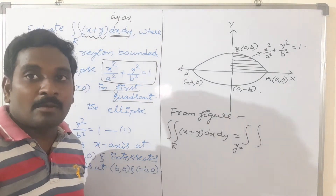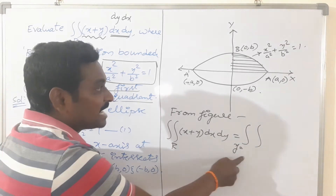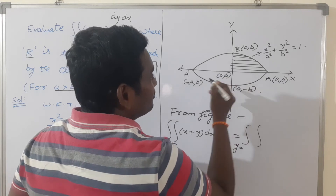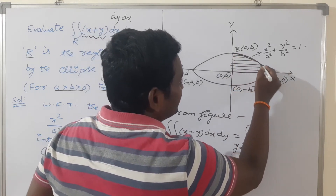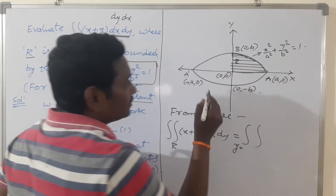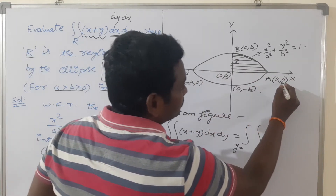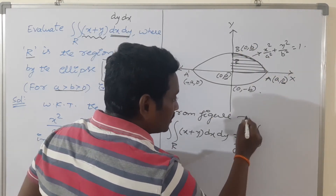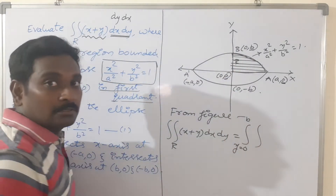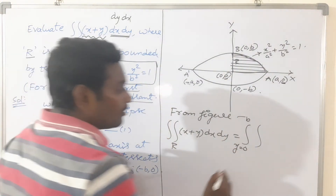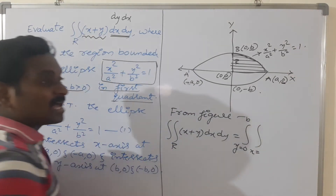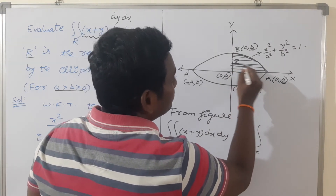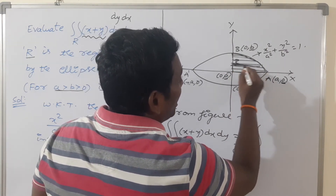This problem is different because the order of integration is provided as dx dy instead of dy dx. That's why in this type of problem, first we should express y limits as constants. In this region, observing the y-coordinates, y varies from minimum to maximum value. So y varies from 0 to b. Now we should express x limits in terms of y, so take a horizontal strip for x limits.